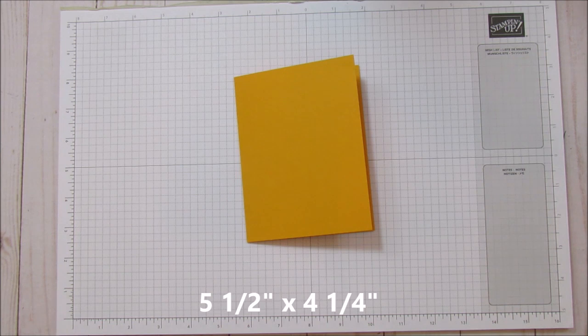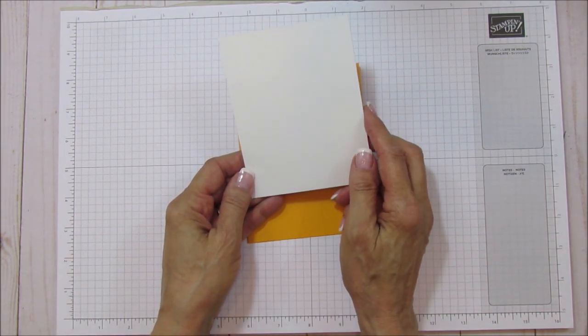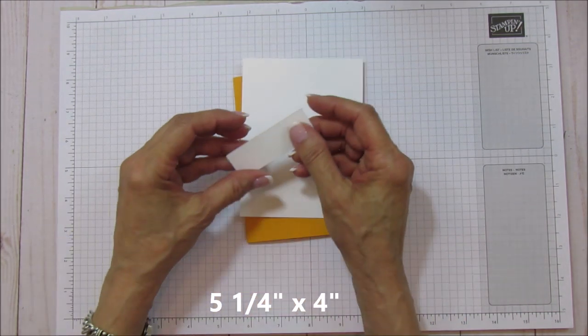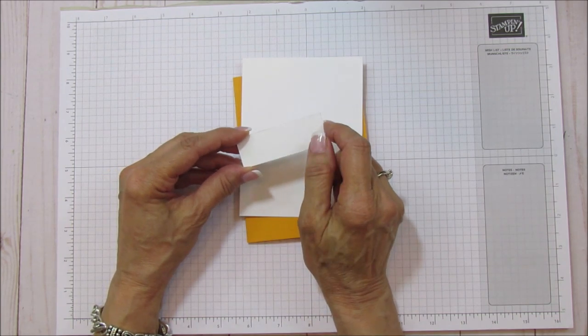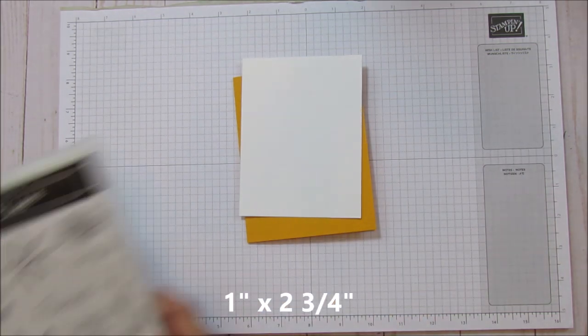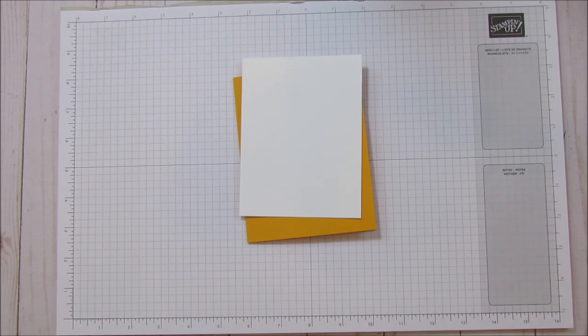You're also going to need Whisper White for our background stamp and it is 5.25 x 4. And then you also need a small piece of Whisper White for the Friends Sentiment which is 1 x 2 and 3 quarters. And that Friends Sentiment also comes from the Daisy Lane.